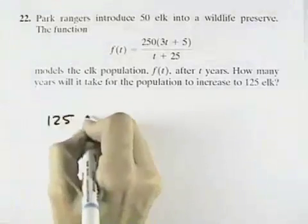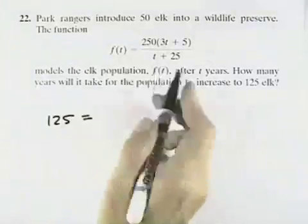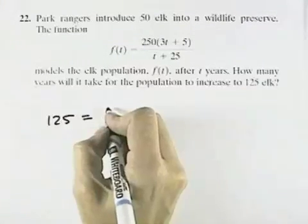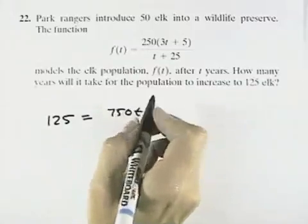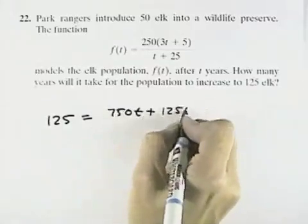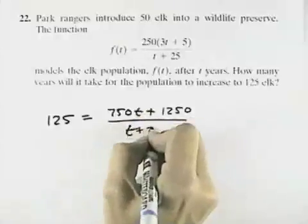Well, that means we'd have 125 in place of f(t). And I'm going to multiply out the numerator to get 250 times 3t is 750t plus 250 times 5 is 1250, all over t plus 25.